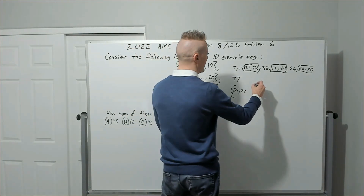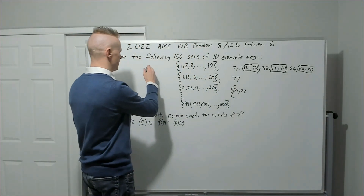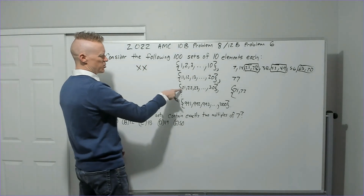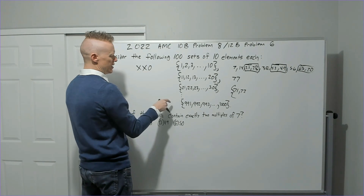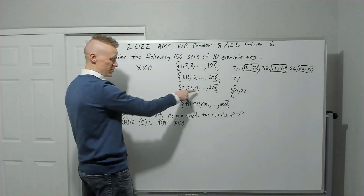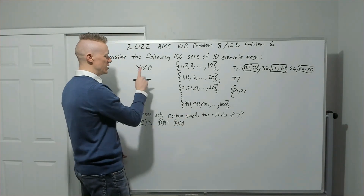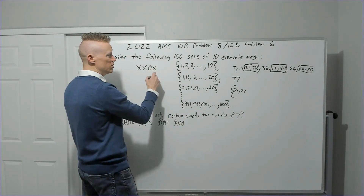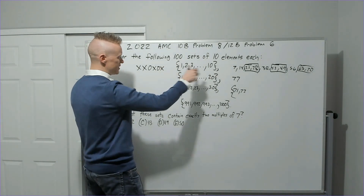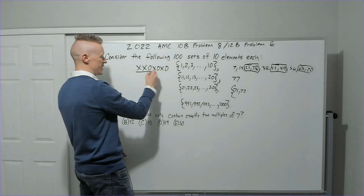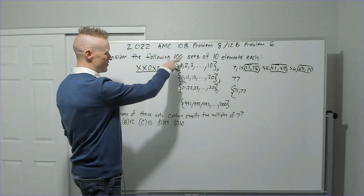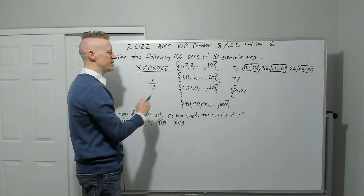So: {1–10} = X, {11–20} = X, {21–30} = O (the '20s' set), {31–40} = X, {41–50} = O, {51–60} = X, {61–70} = O. That gives us 3 out of every 7 groups having exactly two multiples of 7.